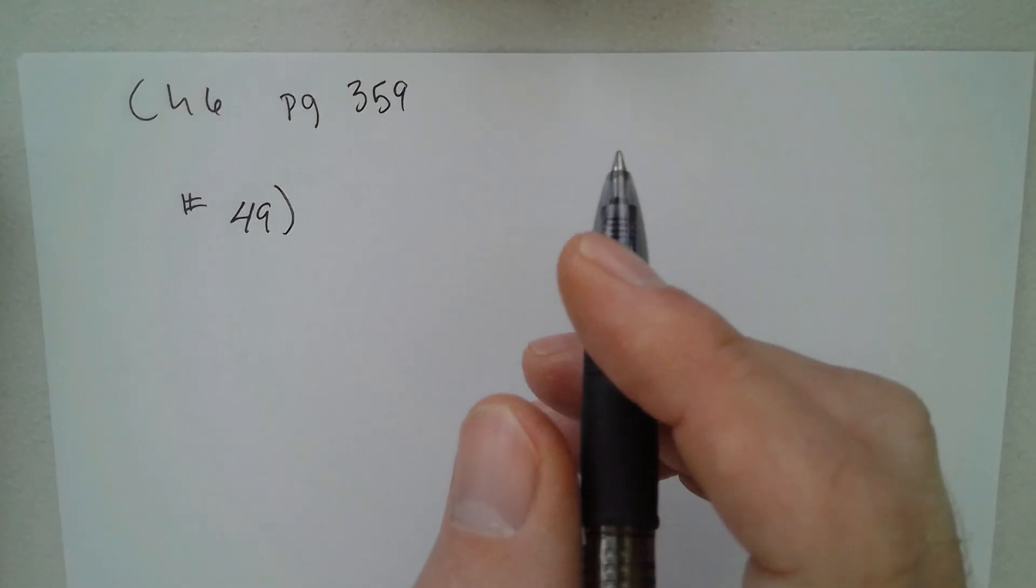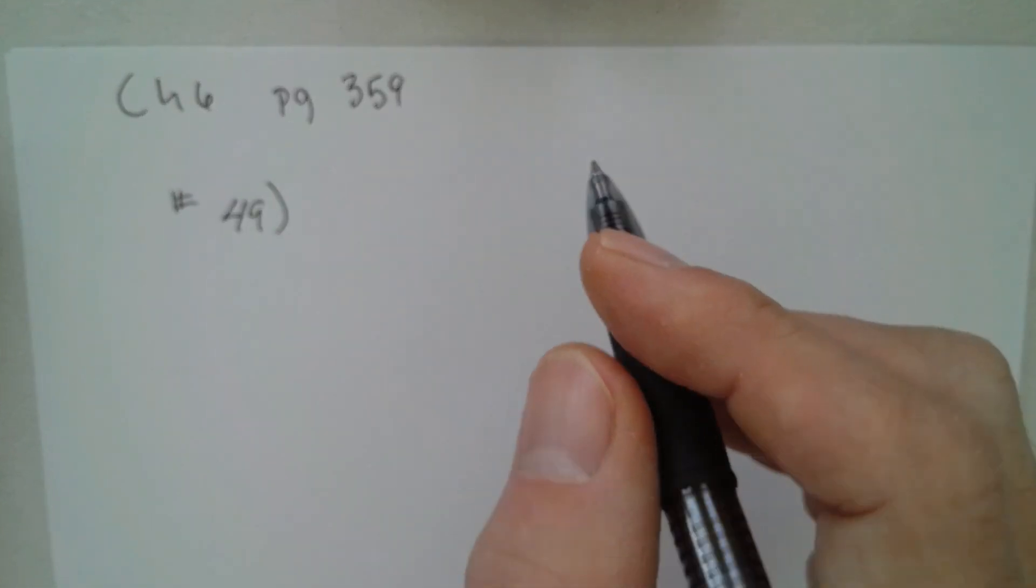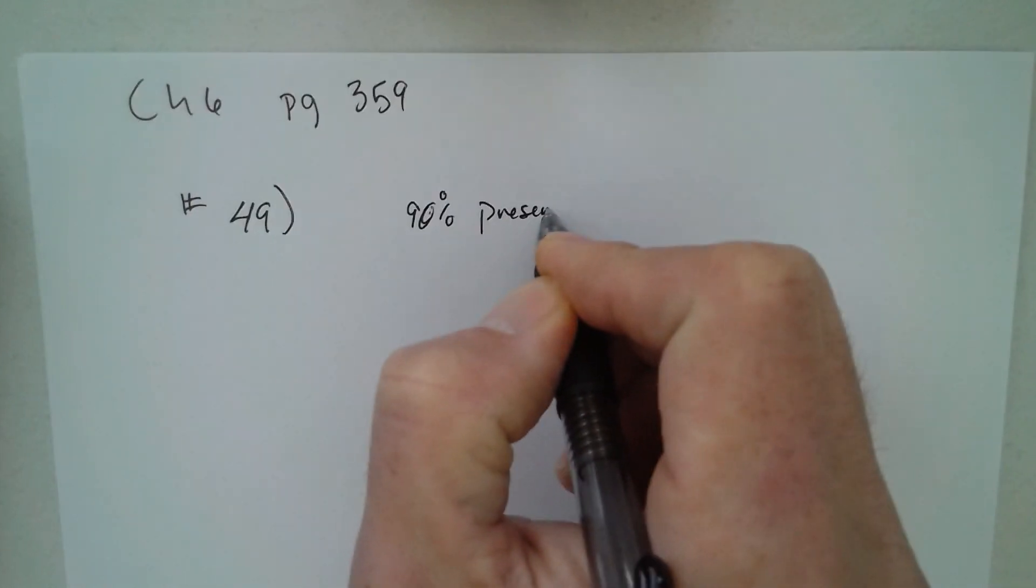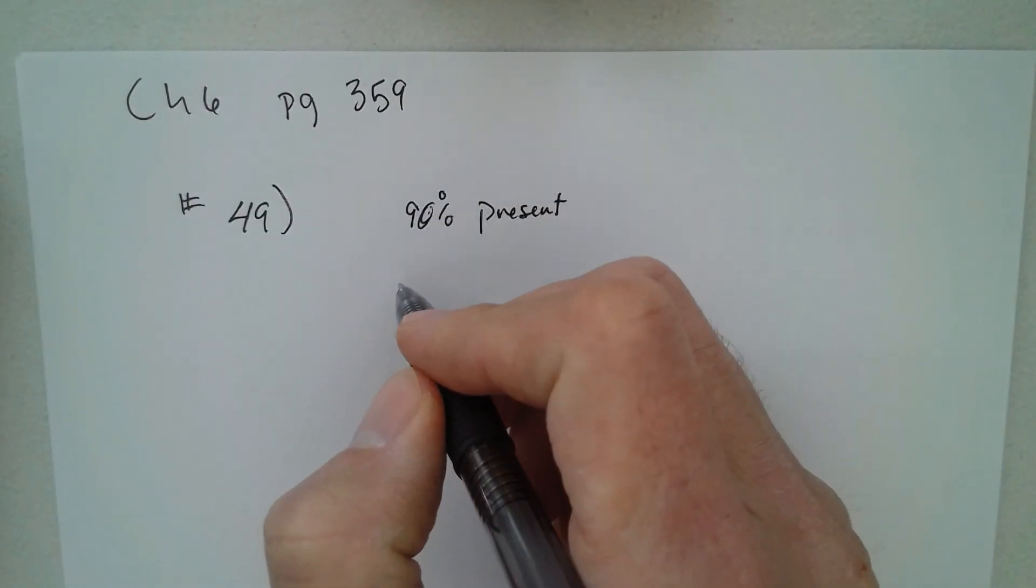Page 359, number 49. Carbon-14: What's the age of a sample of charcoal in which 90% of the carbon-14 that was originally present has decayed? So it's 90% present, and it's carbon-14, which you need to know that the half-life of carbon-14...